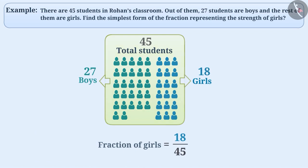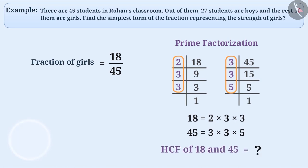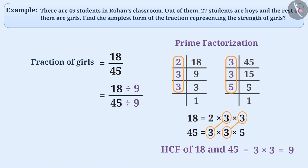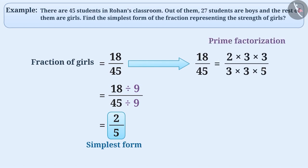To represent eighteen by forty-five in its simplest form, we first do the prime factorization of eighteen and forty-five. The common factors of both are three times three, so the HCF is nine. We divide the numerator and denominator of eighteen by forty-five by nine to get the simplest form: two by five. To derive the simplest form, we can represent the numerator and denominator in their prime factors and cancel the common factors.